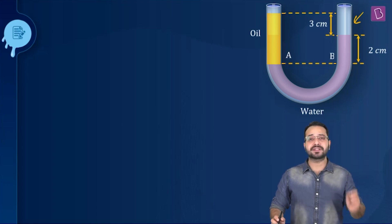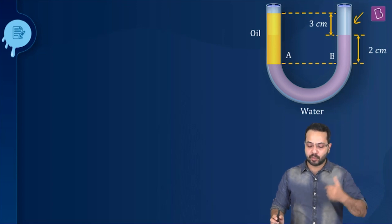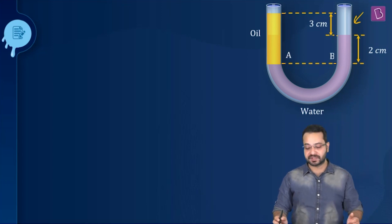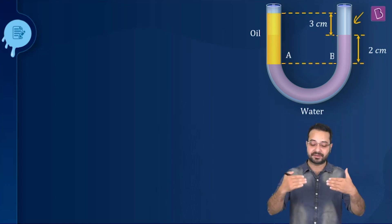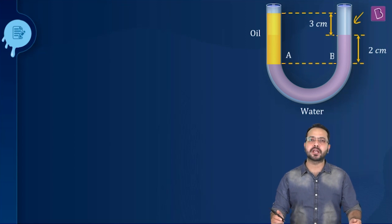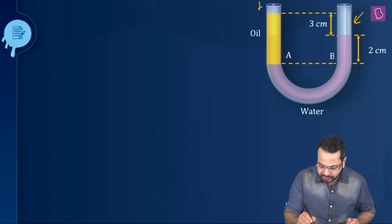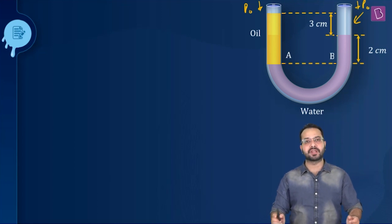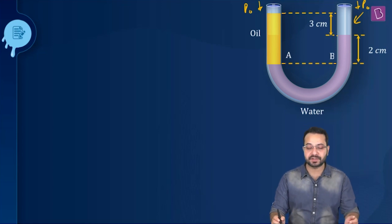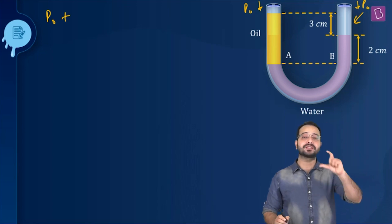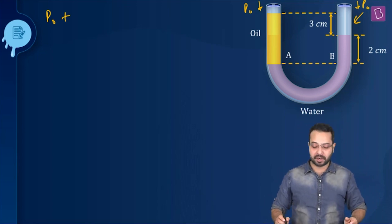Again, the concept is: for the same liquid at the same point or at the same level, the pressure has to be the same. This tells me that the pressure at point A and the pressure at point B has to be the same, because A and B both have water and they are at the same level and the liquids are in equilibrium. The pressure at point A is going to be P₀ plus the pressure due to the column of oil.